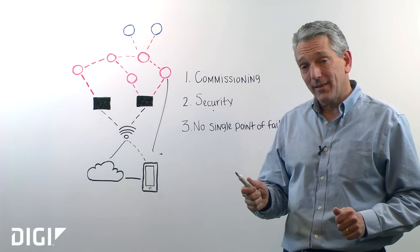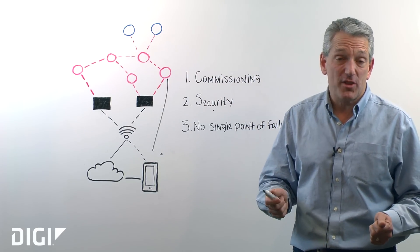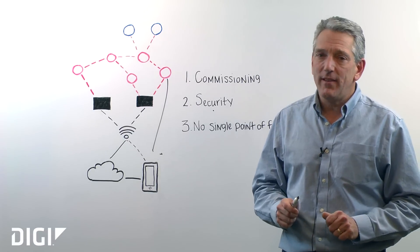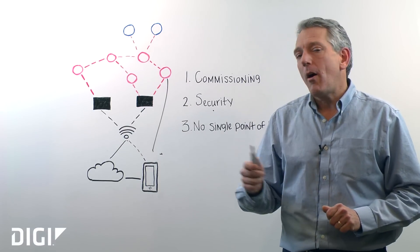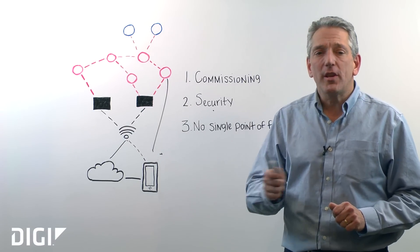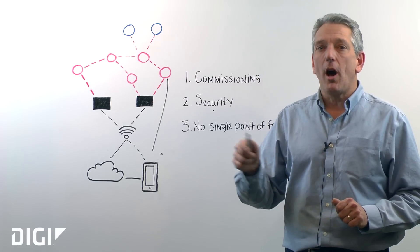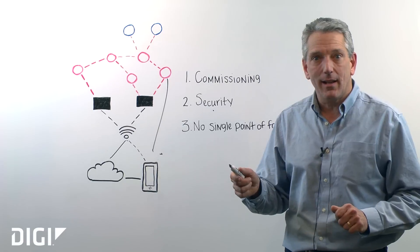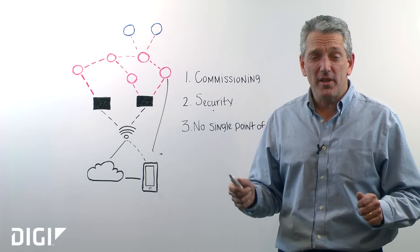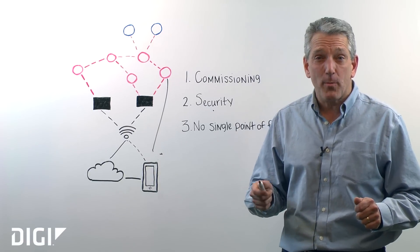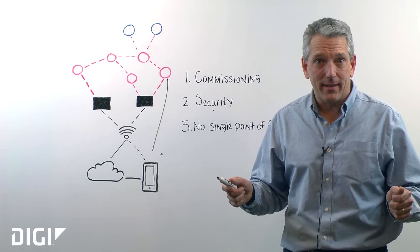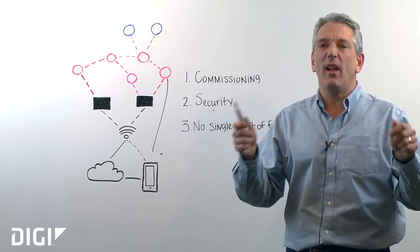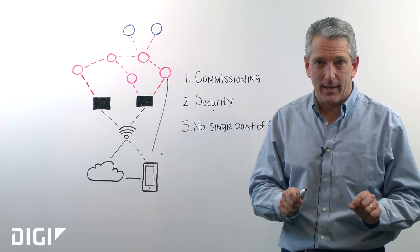In addition to 802.15.4 base security, because Thread is an IPv6 based protocol, all communications can use additional security protocols like TLS, DTLS, and SSL — all those other IP-based protocols that go end-to-end. So you get end-to-end security as well as secure joining and authentication.